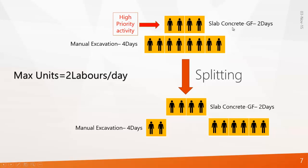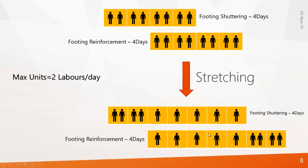Another option is splitting. Let's say there are two activities: slab concrete for two days and manual excavation for four days. In this example, slab concrete is set as a high priority activity — you cannot delay it; it has to start on time. So what do you do? You start manual excavation on the very first day with two labor forces. When it reaches the second day, since you cannot delay slab concrete, the laborers start working on it, meaning they are not working on manual excavation for those two days. After completing slab concrete, the laborers engage on manual excavation for its third, fourth, and fifth day. You have split the manual excavation activity. This process is called splitting.